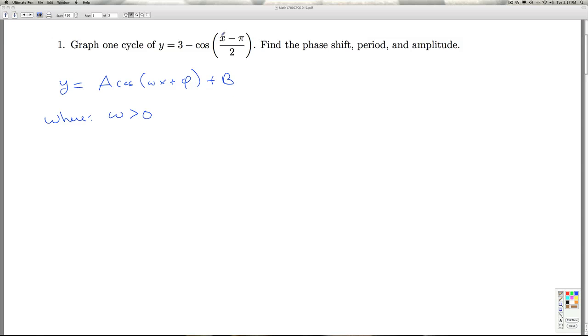And we discussed in class that if the coefficient of x did happen to be negative, we could factor a negative out and use the even identity for cosine to get rid of it. So if I proceed in this manner, I need to get the cosine term first.